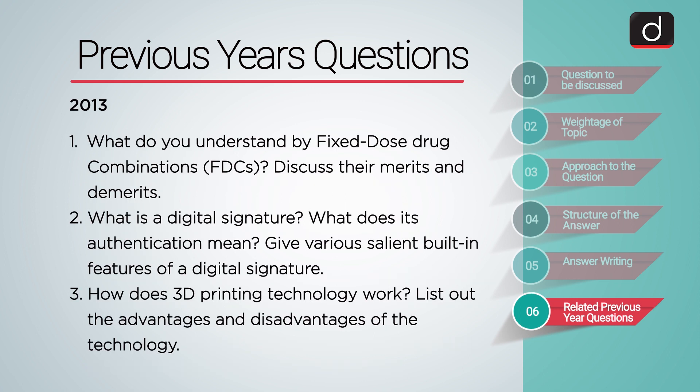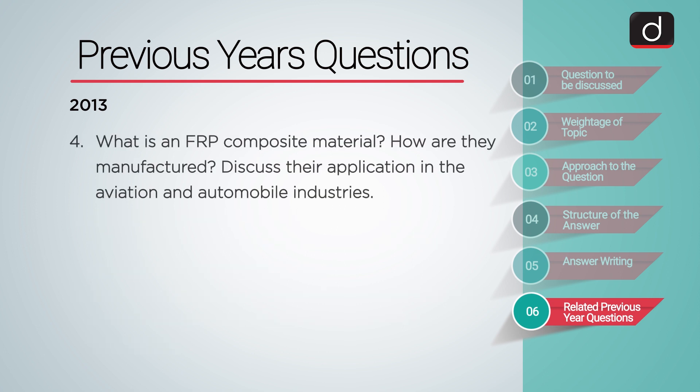In 2013, the following questions were asked: What is a digital signature? What does its authentication mean? Give various salient built-in features of a digital signature. How does 3D printing technology work? List out the advantages and disadvantages of the technology. What is an FRP composite material? How are they manufactured? Discuss their application in the aviation and automobile industries.